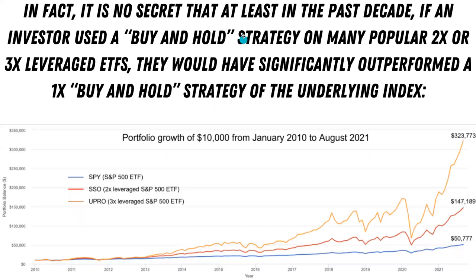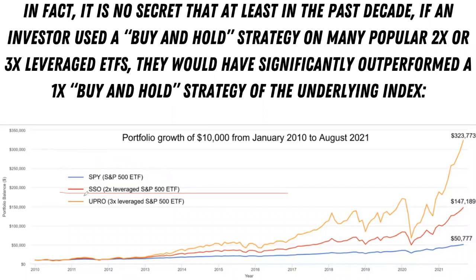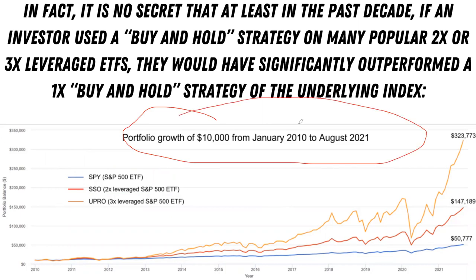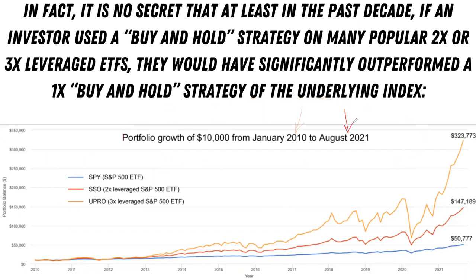In fact, it is no secret that at least in the past decade, if an investor used a buy-and-hold strategy on many popular 2x or 3x leveraged ETFs, they would have significantly outperformed a 1x buy-and-hold strategy of the underlying asset. Here's a great example: the blue is the S&P 500, in red we have SSO — this is a 2x leveraged ETF — and in orange we have UPRO, a 3x leveraged S&P 500 ETF. This is the portfolio growth of $10,000 from January 2010 to August 2021.